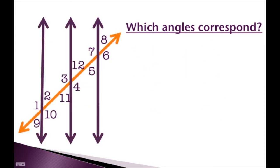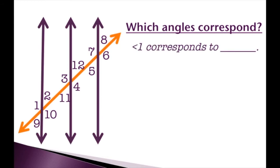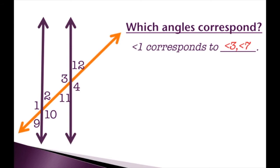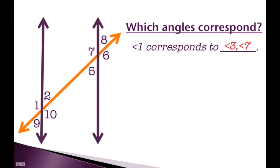Here we have an example of parallel lines cut by a transversal. This looks more difficult because we have three parallel lines instead of the normal two, but it's the same exact thing — we're looking at corresponding angles. If they have the same location or position, they correspond. Angle 1 corresponds to angles 3 and 7. Angle 1 is the top left angle in its group, angle 3 is the top left in its group, and angle 7 is the top left in its group.